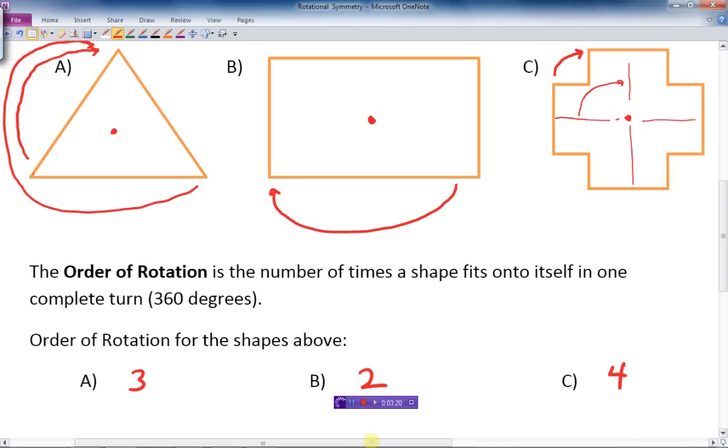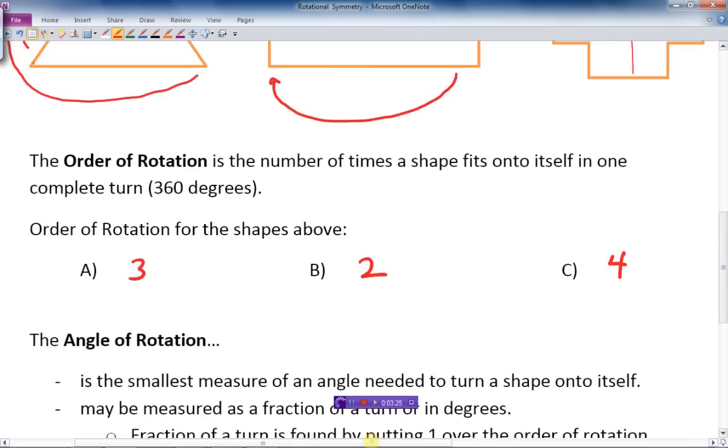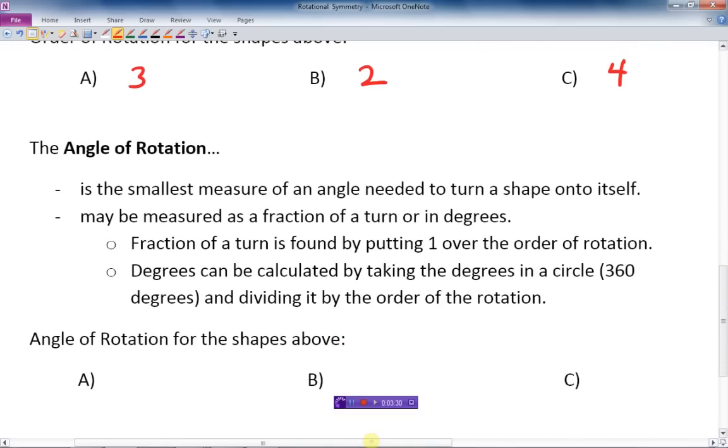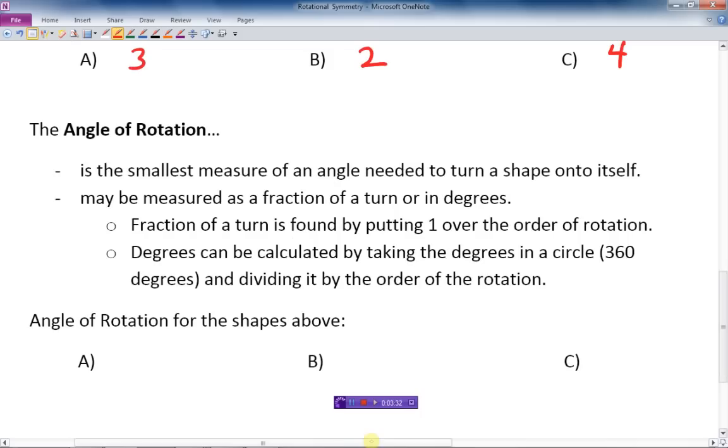So let's continue on here. The angle of rotation. The angle of rotation is the smallest measure of an angle needed to turn a shape onto itself. What's the least number of degrees? In other words, the minimum measure the angle needs to be rotated in order to look like itself again. That's the angle of rotation. We can measure it as a fraction of a turn or as a number of degrees.